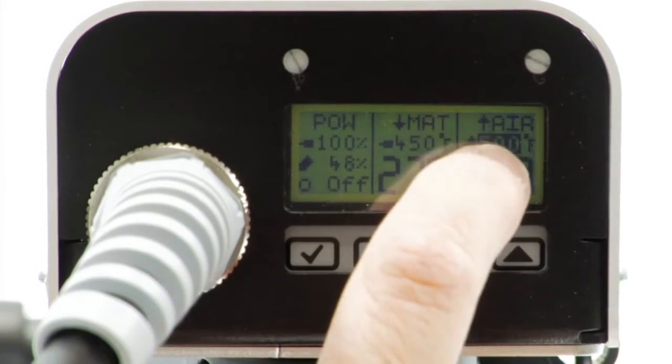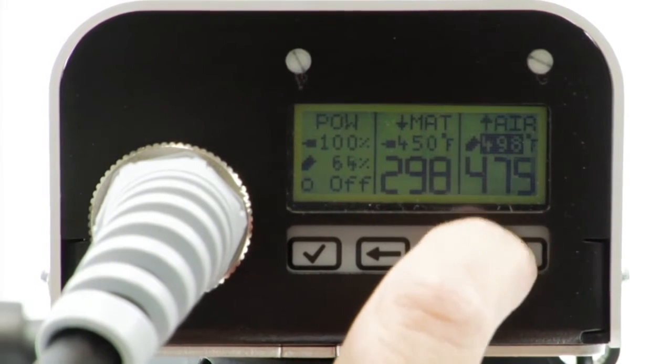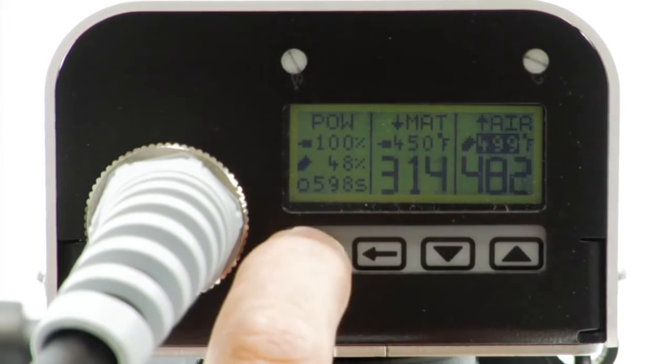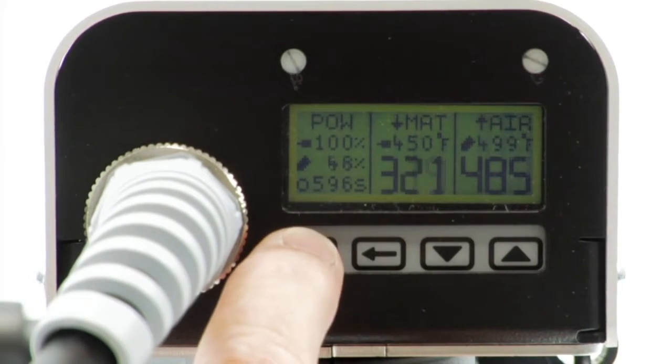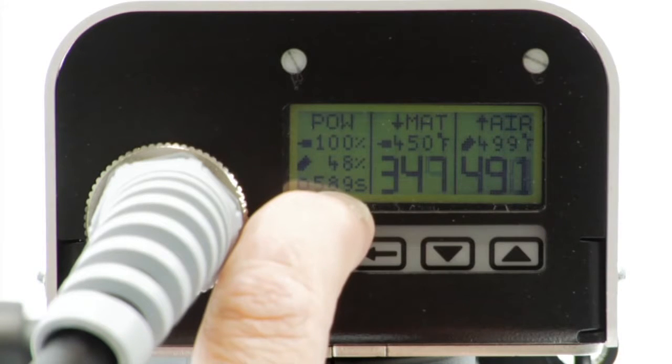Use the up arrow to select the air temperature. Adjust with the up and down arrows. Press the check button. The lower left corner of the display shows the number of seconds before you can activate the drive motor and begin welding.